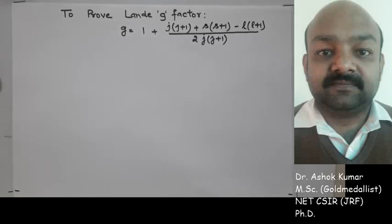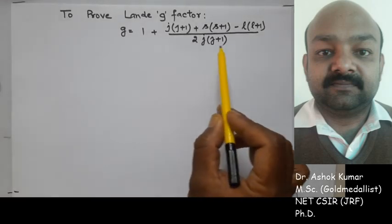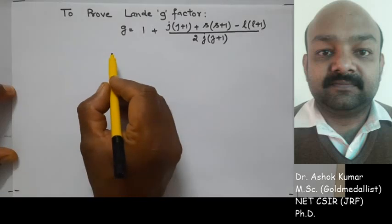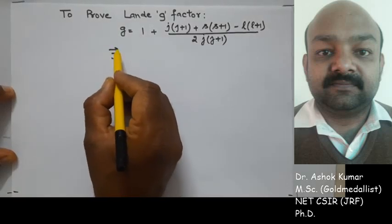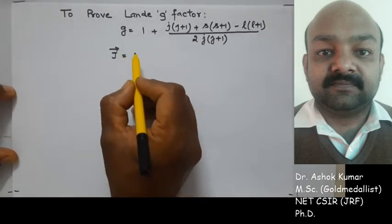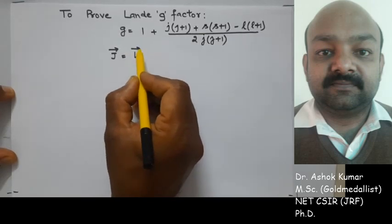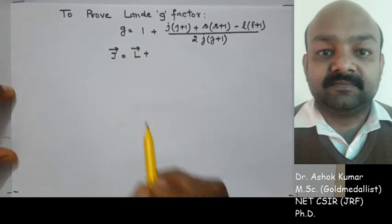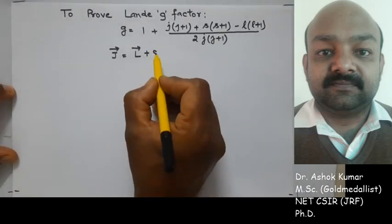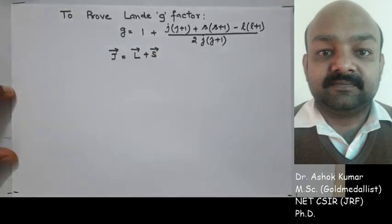Hello friends. In the present lecture we will try to derive the expression for the Landé g-factor. As we know, the total angular momentum associated with an electron is equal to the sum of the orbital angular momentum and the spin angular momentum associated with the electron.